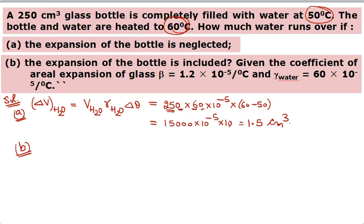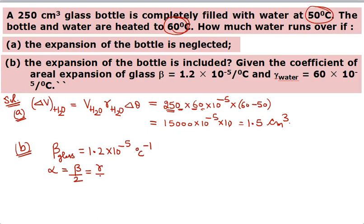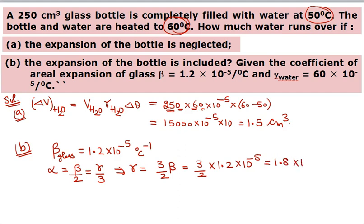Next part: the expansion of the bottle is included. The coefficient of linear expansion of glass (beta) is given as 1.2×10⁻⁵ per °C. We need gamma of glass. Using alpha = beta/2 = gamma/3, gamma = (3/2) × beta = (3/2) × 1.2×10⁻⁵ = 1.8×10⁻⁵ per °C. So gamma of glass is 1.8×10⁻⁵, which is less than gamma of water (60×10⁻⁵), so liquid will still overflow since water expands more than glass.